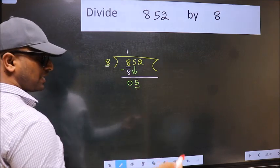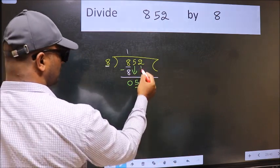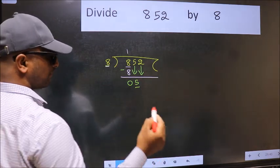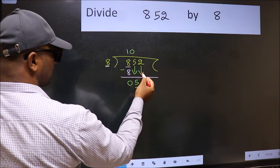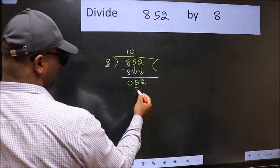So we should bring down the second number, and the rule to bring down the second number is we should put 0 here. Then only we can bring this number down. Now 52.